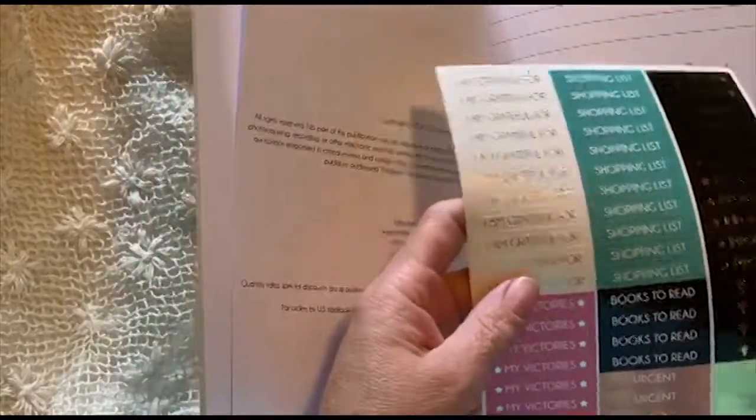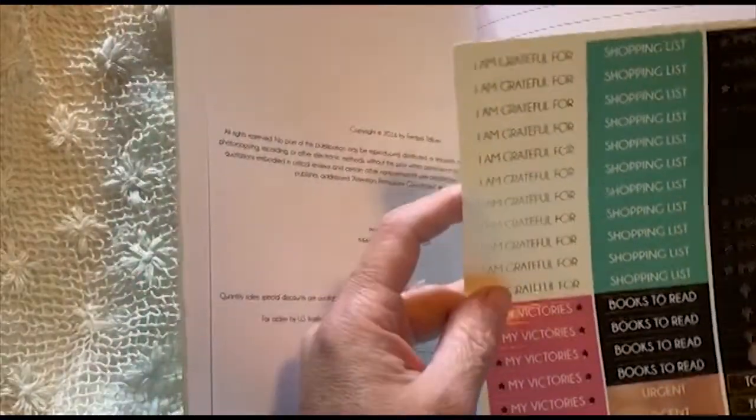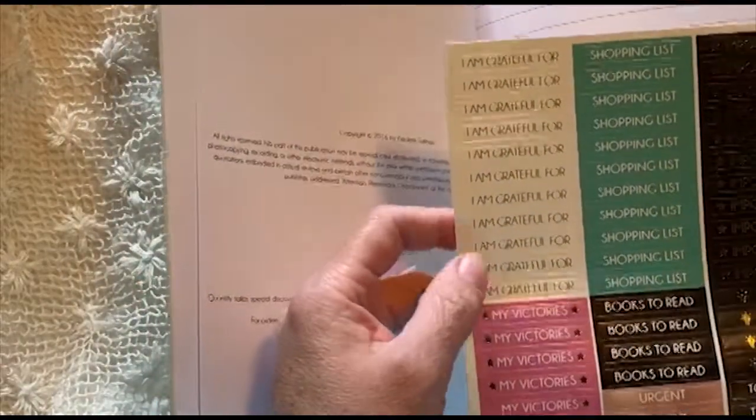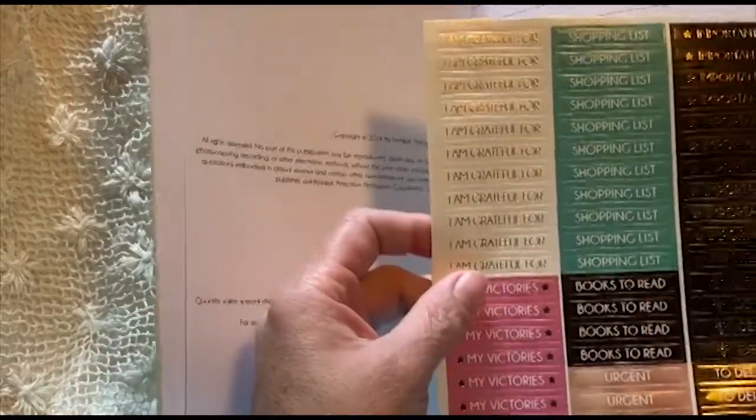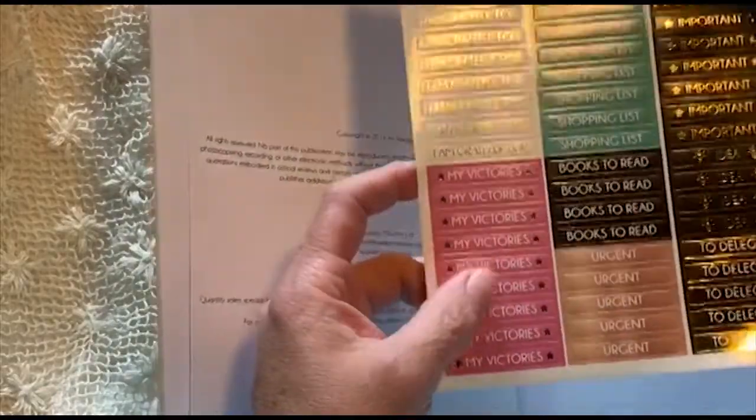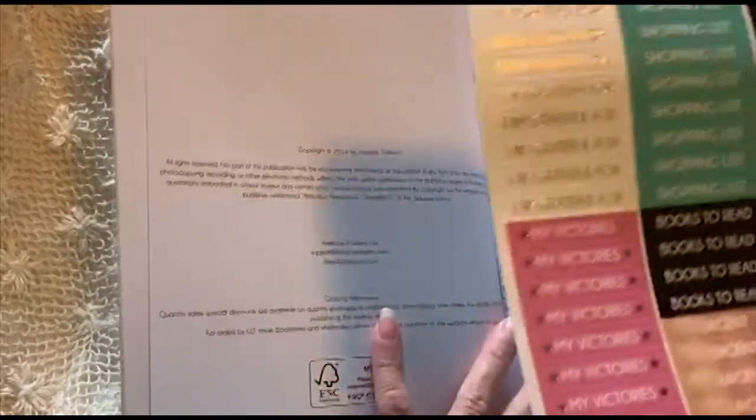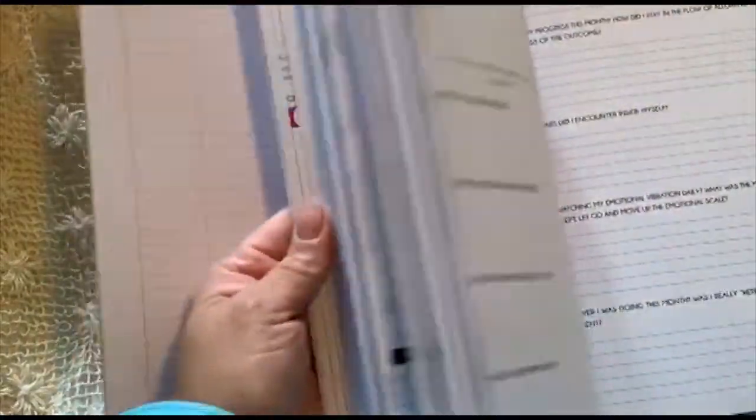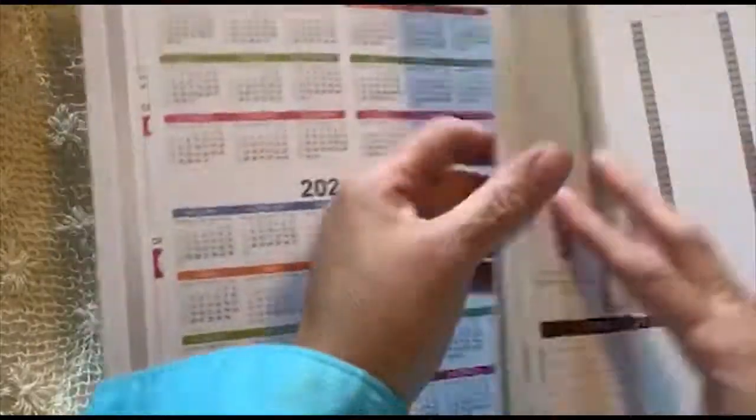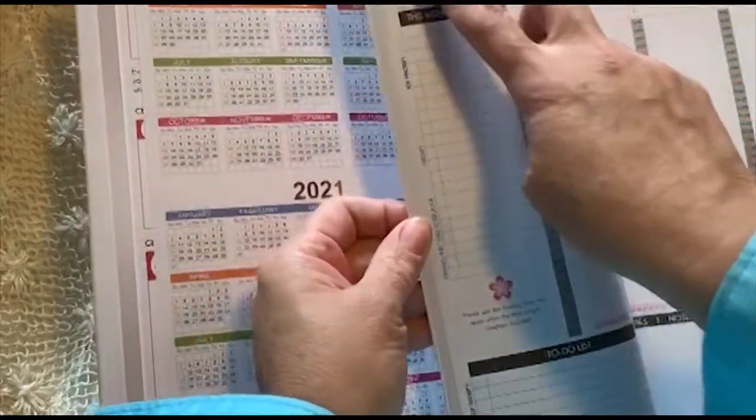Then it has shopping list, I'm grateful for, importance and ideas, to delegate, urgent, and you know, my victories. So you can just change them around along in your planning pages. This one is dated, so I'll follow the pattern.